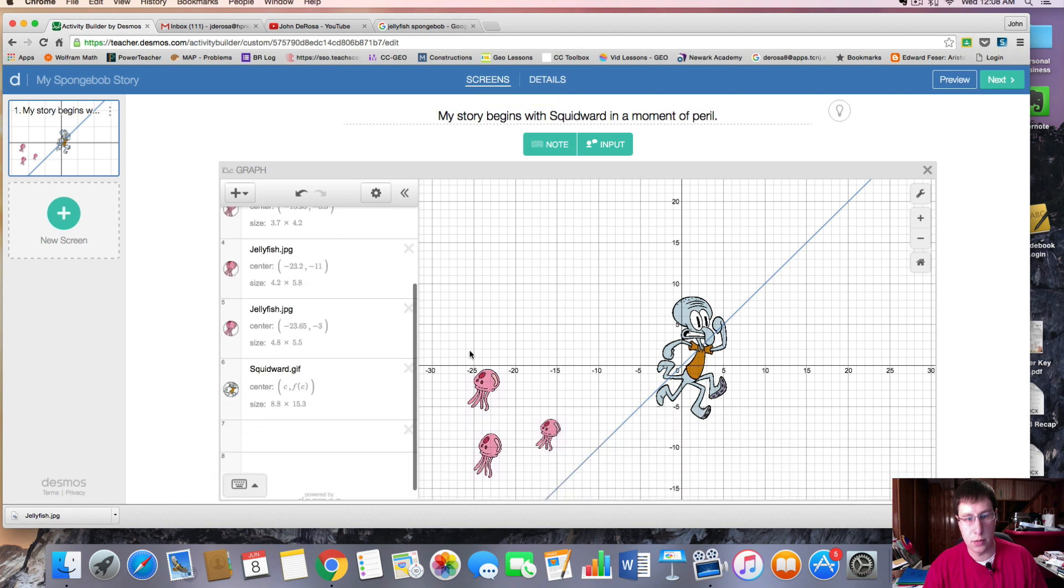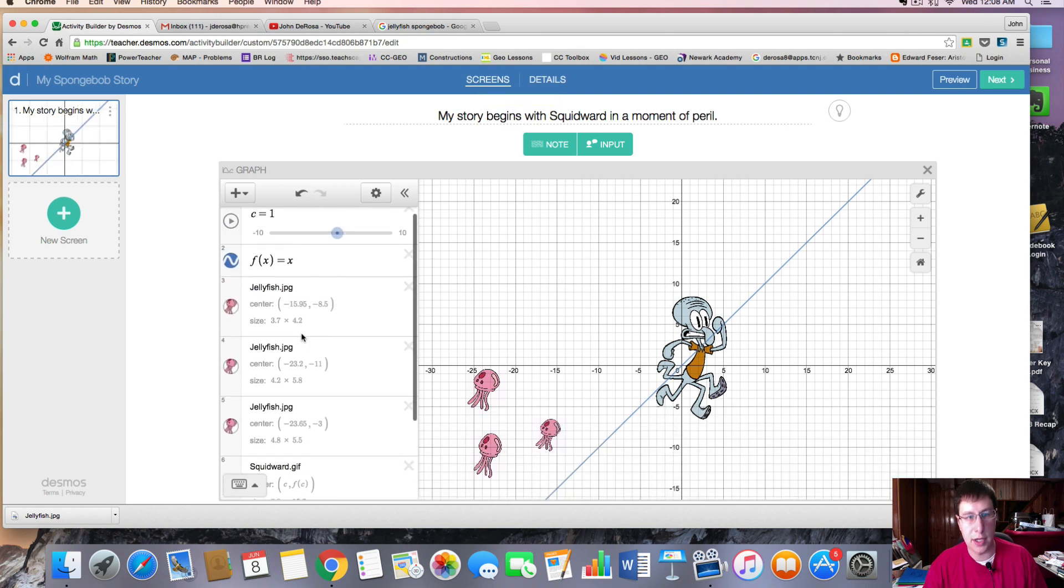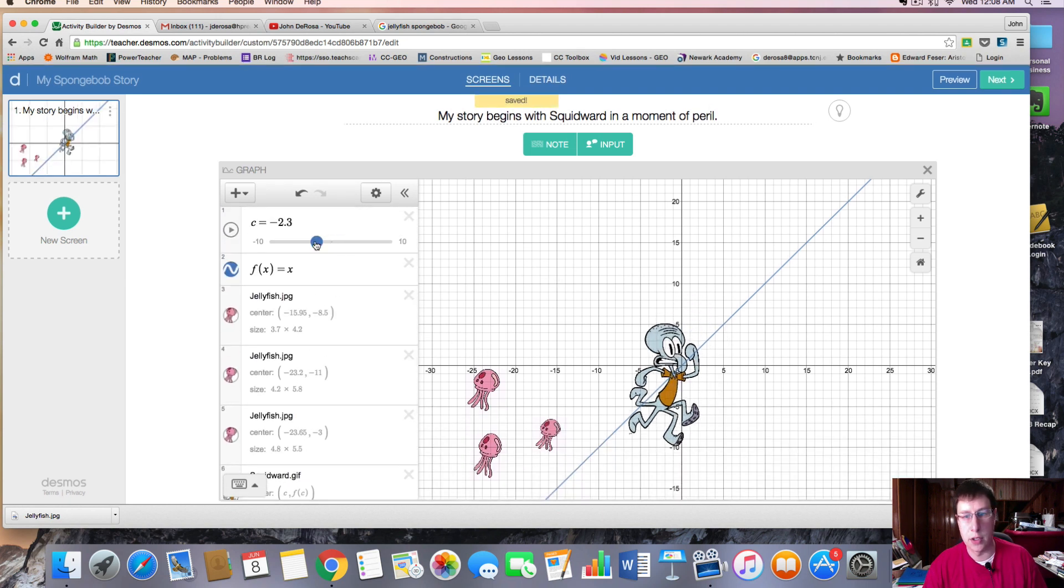And now when you play this slider, let's move it back and forth, you'll see Squidward will move along the line. So if I press play here, we have Squidward running away at a steady rate.